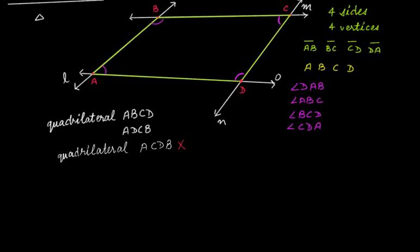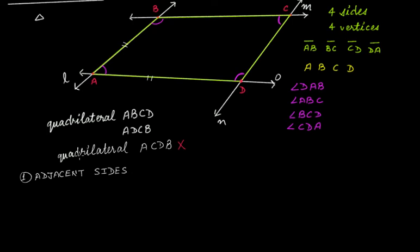Let's first discuss adjacent sides. In this quadrilateral, AD and AB are adjacent sides.